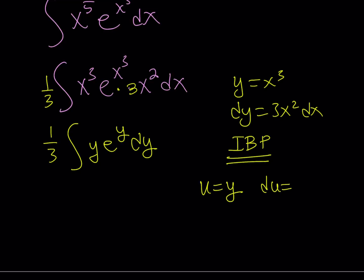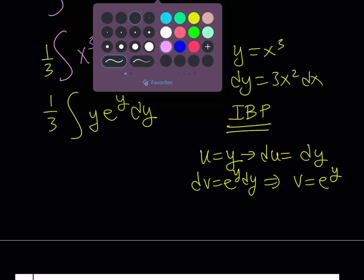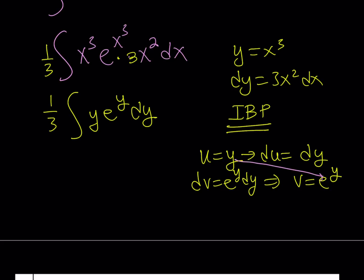From here, we get du equals dy. And dv equals e to the power y dy, so v is the integral of e to the power y dy which is e to the power y. We're going to go diagonally, multiply these and subtract that.